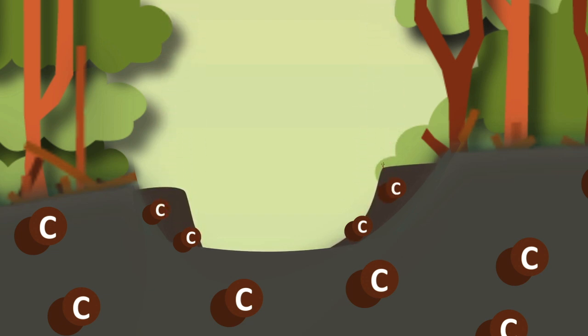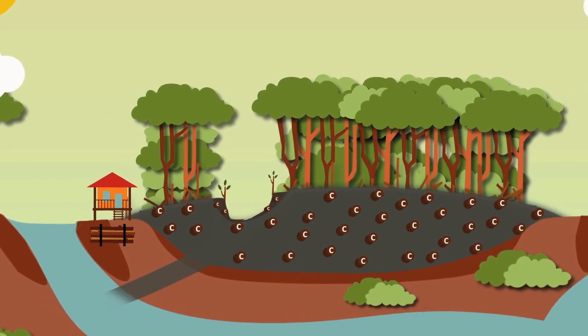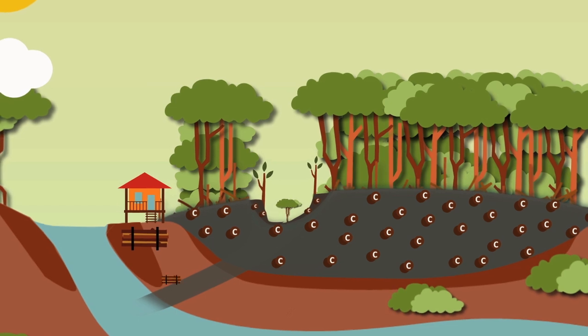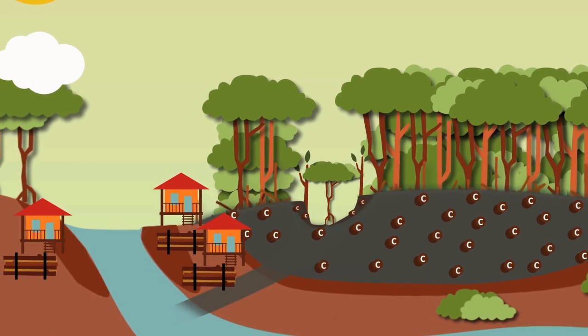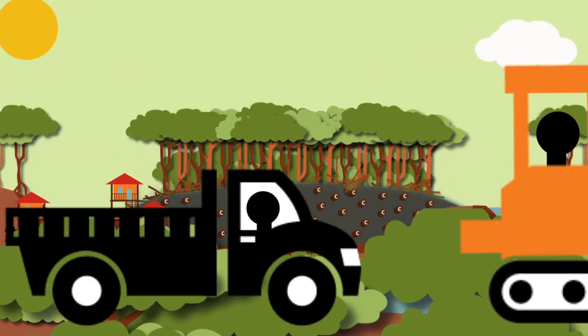At this scale, the impacts are relatively small. The peatland forests will continue to store vast amounts of carbon, and also provide important goods and services for the local communities. It's when you go large scale that everything changes.